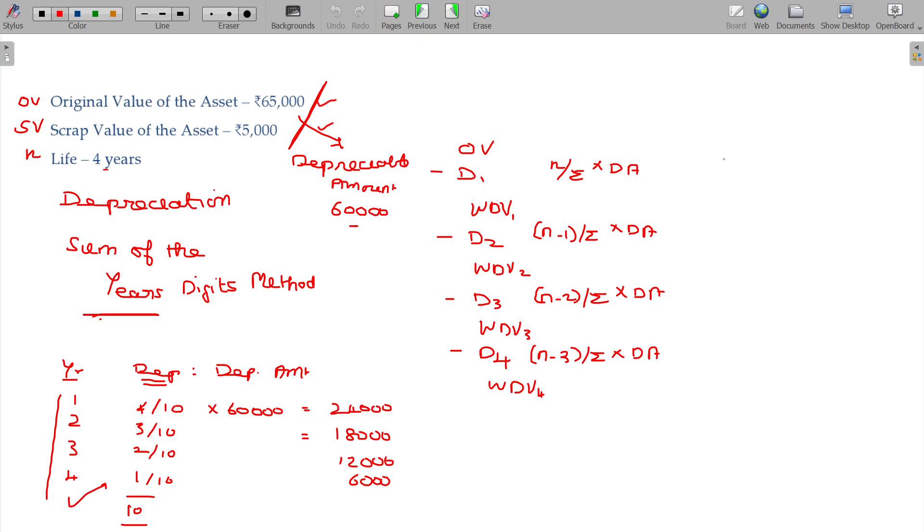In this model, the original value being 65,000, the first year depreciation being 24,000, after subtracting WDV value here being 41,000. Second year depreciation being 18,000 and WDV for the second year being 23,000. Depreciation for the third year being 12,000, after subtracting the value being 11,000. Depreciation for the fourth year being 6,000. As we expected, the scrap value being the same 5,000. The WDV at the last will be equal to the scrap value.